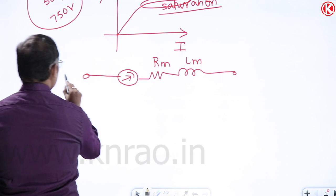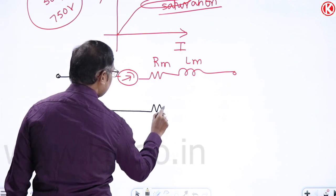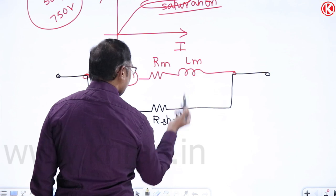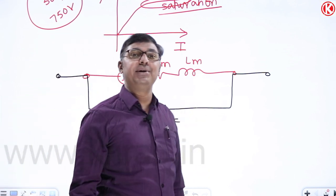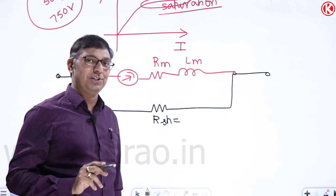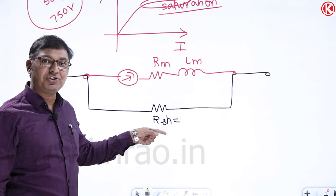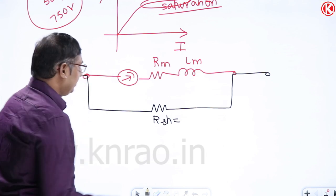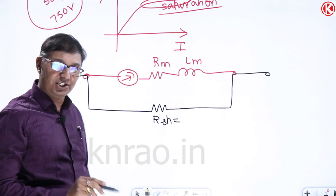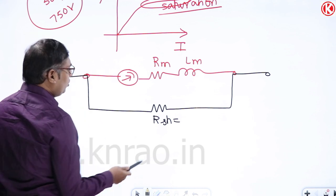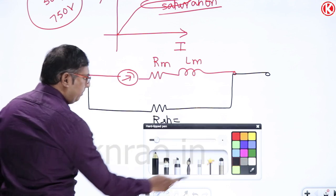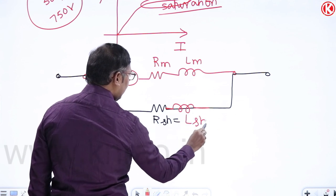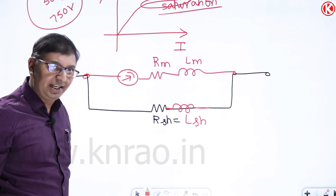If we connect only a shunt resistance (as in PMMC instruments), the MI meter design depends on frequency because of the inductive element. If frequency changes, reactance changes, net impedance changes, and the indication changes for the same applied current. To make the design independent of frequency, we must connect both a shunt resistance and a shunt inductance.